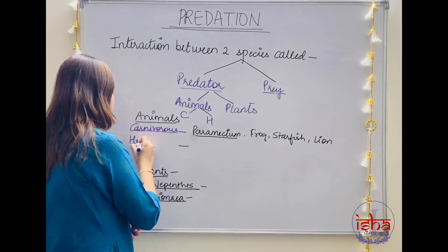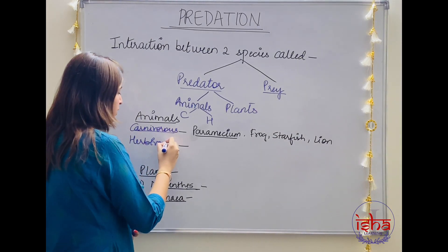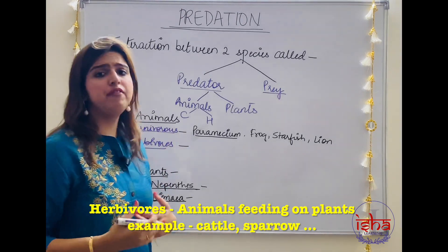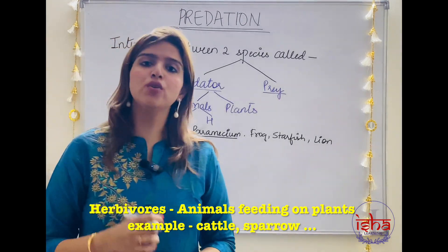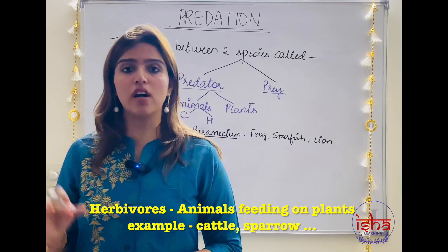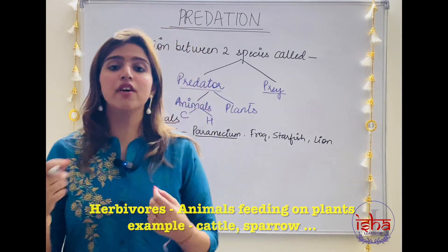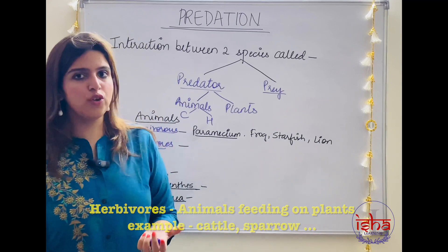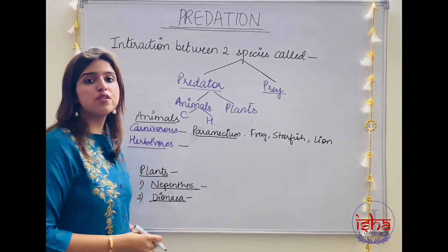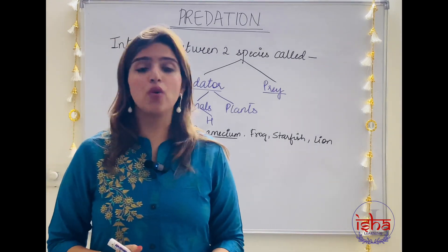The second category is herbivores. Those animals that feed on plants are also predators. A cattle that is grazing on grass is also a predator in its own sense. A sparrow that I've already mentioned is also a predator. So herbivores are also predators. In fact, plants are also predators.